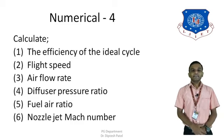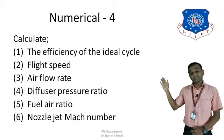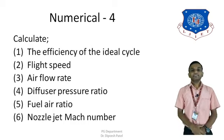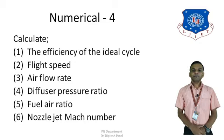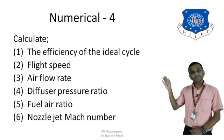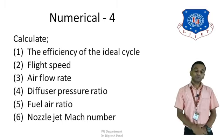On the basis of the given data, we need to calculate six different things: first, the efficiency of the ideal cycle (η_r); second, the flight speed (u); third, the air flow rate (ṁ_a); fourth, the diffuser pressure ratio (ROD); fifth, the fuel-air ratio (ṁ_f / ṁ_a); and sixth, the nozzle jet Mach number M4, which is the Mach number at the exit of the nozzle.